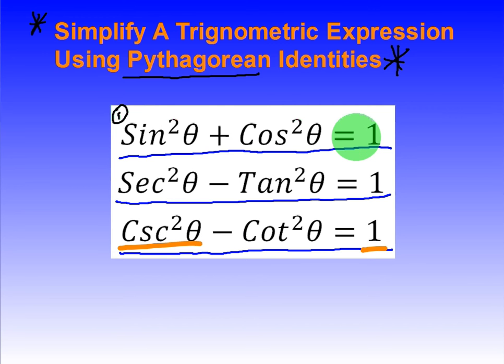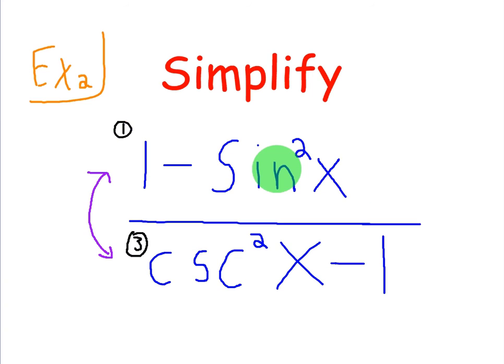So when you're doing these, you have to kind of recognize which of the identities it looks like, and that's why you need to know those identities. So I just labeled that as 1 since it has two of the three things in the first identity.